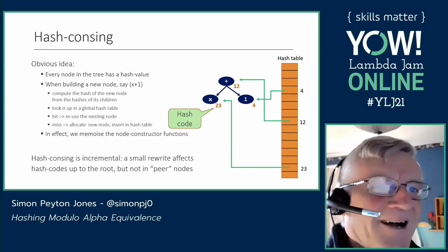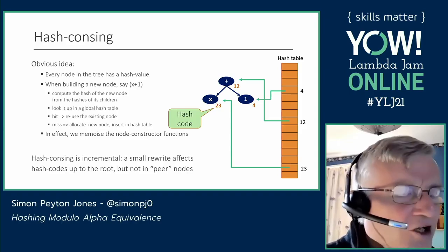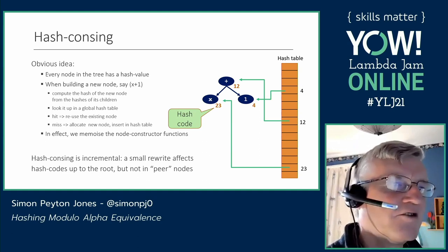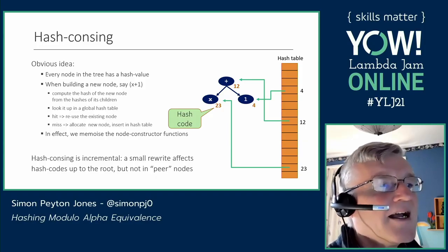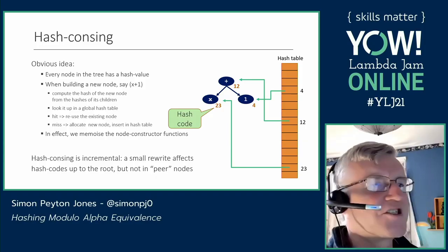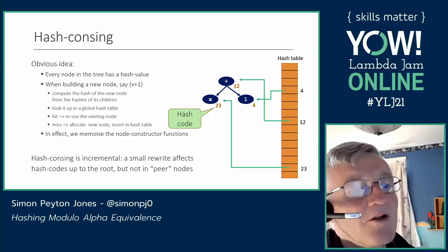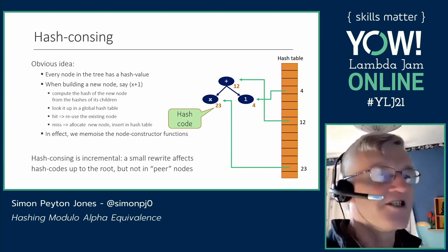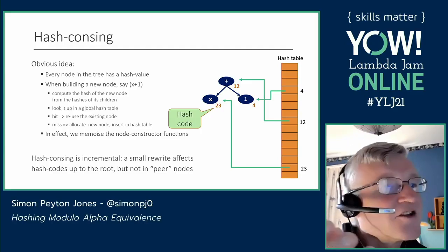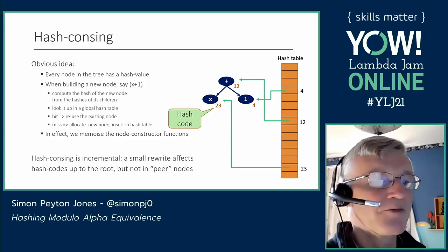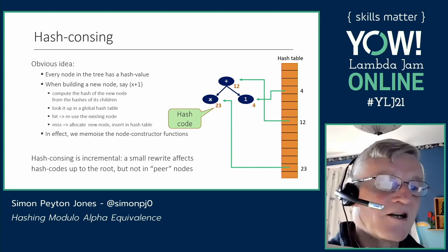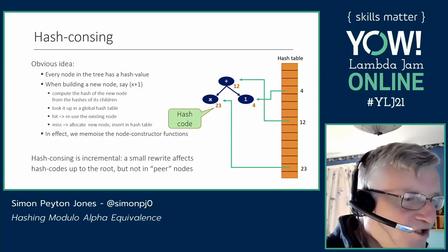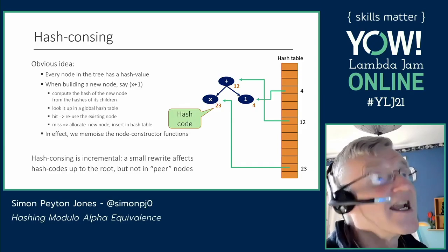Idea number one is just to use hash consing. Every node in the tree has a hash value. When building a new node — say an x plus one node — you compute the hashes of the children, then the hash of the new node from those, and maybe the plus operator. You look it up in a global hash table; if it's not there you allocate and insert it, if it is you reuse the existing one. It's like a memoized constructor. And hash consing is very incremental: after a rewrite, each new node just looks up in the hash table and extends it.